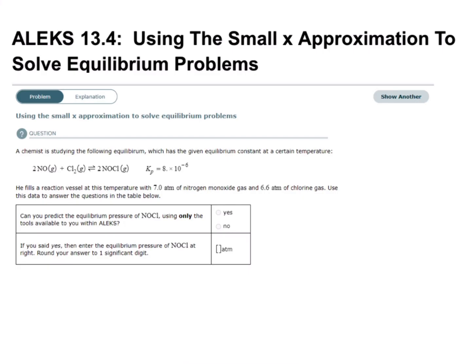We're going to work on an Alex problem that deals with using the small x approximation to solve equilibrium problems. A chemist is studying the following equilibrium, which has a given equilibrium constant at a certain temperature. We have a balanced equation and the equilibrium constant. He fills a reaction vessel at this temperature with 7.0 atm of nitrogen monoxide gas and 6.6 atm of chlorine gas. We're asked to predict the equilibrium pressure of NOCl using only the tools available within Alex.